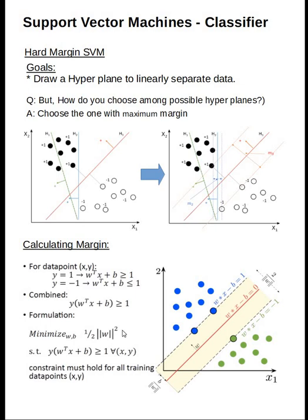The final formulation for support vector machines is 1/2 times w norm squared, such that y times w transpose x plus b is greater than 1 for all elements. This constraint must hold good for all training data points x and y. That's the quick summary of what a hard margin SVM is and what we formulate as a hard margin SVM. The next videos will cover soft margin SVMs, kernel trick, and kernels. Thank you very much.